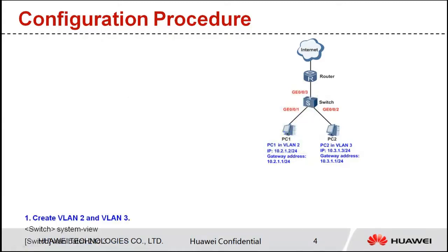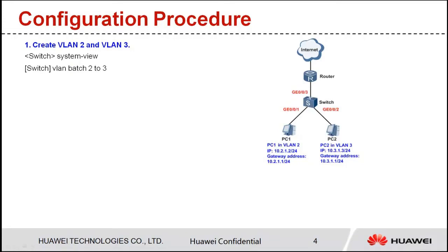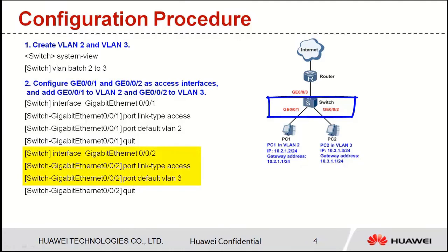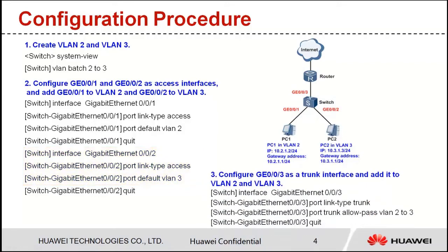Let's see the switch configuration. Step 1: Create VLAN 2 and VLAN 3. The VLAN Batch command can be used to create VLAN 2 and VLAN 3. Step 2: Configure GE0/0/1 and GE0/0/2 connected to users. Configure GE0/0/1 as an access interface and add it to VLAN 2. Configure GE0/0/2 as an access interface and add it to VLAN 3. Step 3: Configure GE0/0/3 connected to the router. Configure GE0/0/3 as a trunk interface and add it to VLAN 2 and VLAN 3.